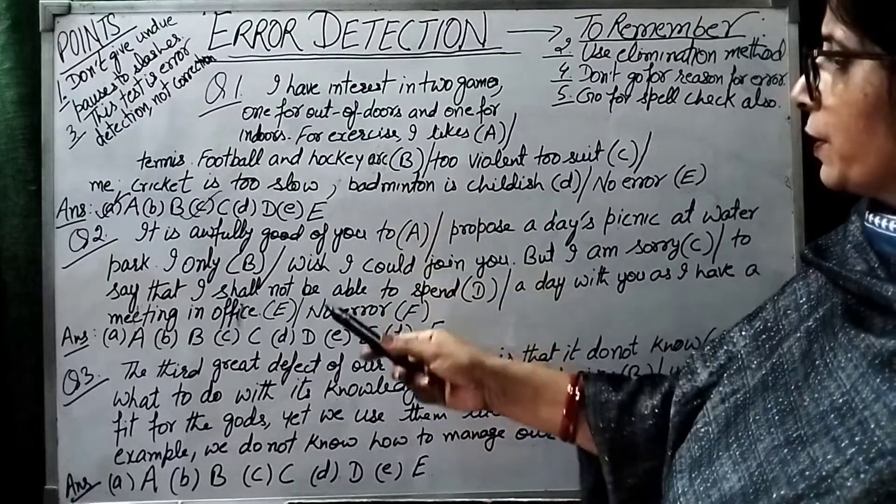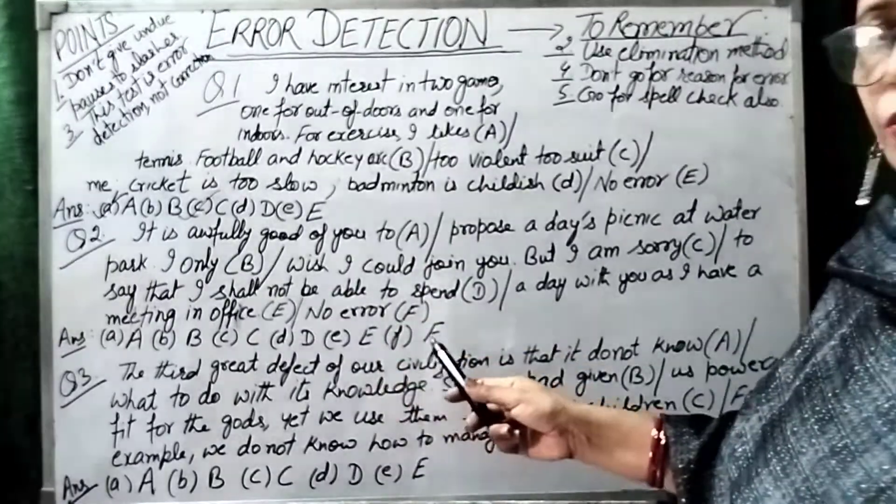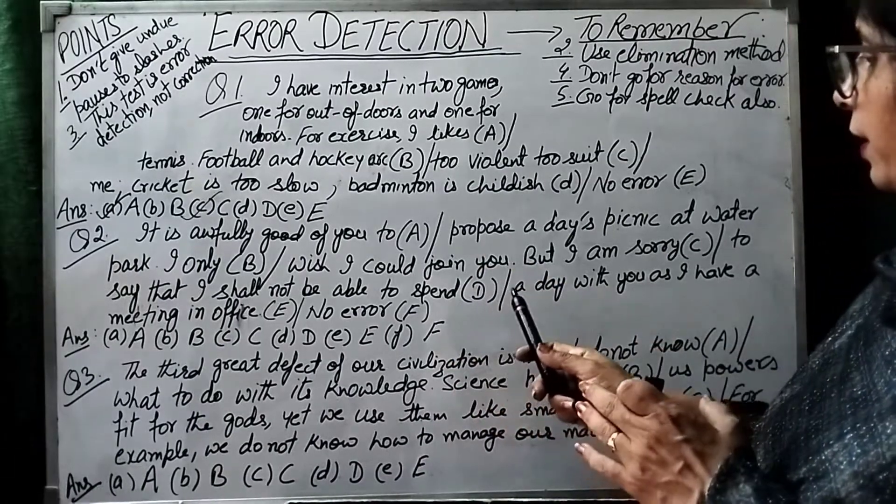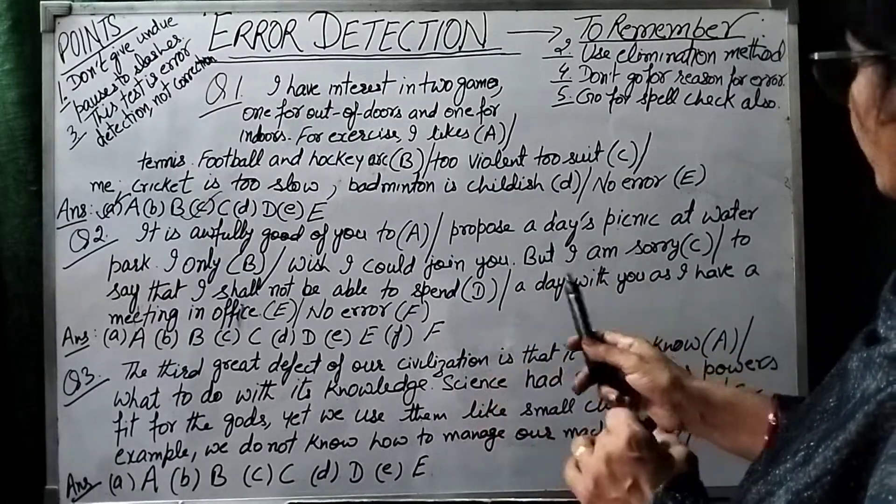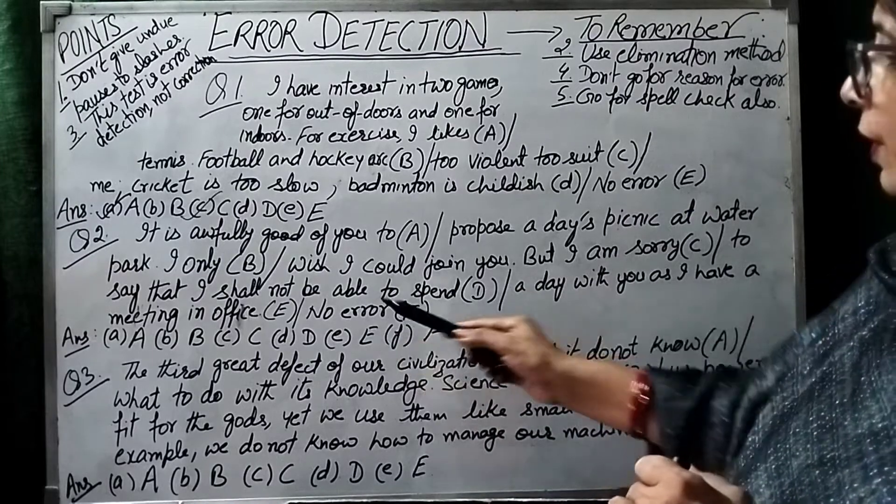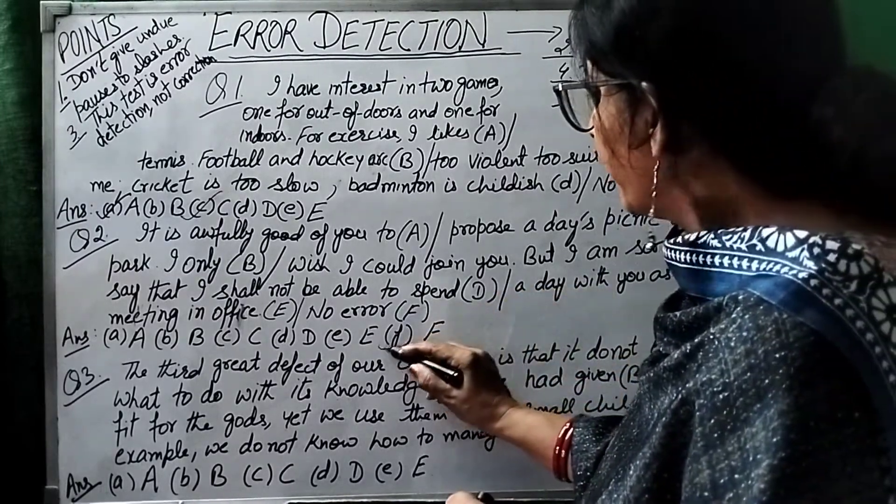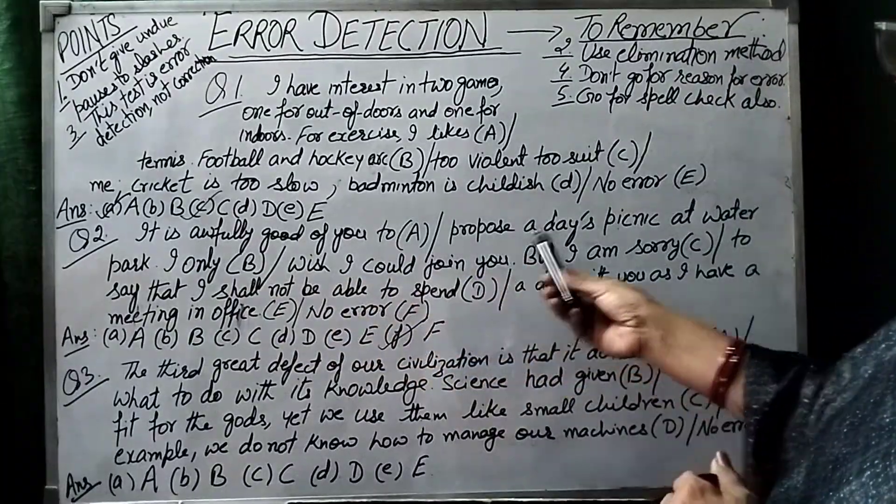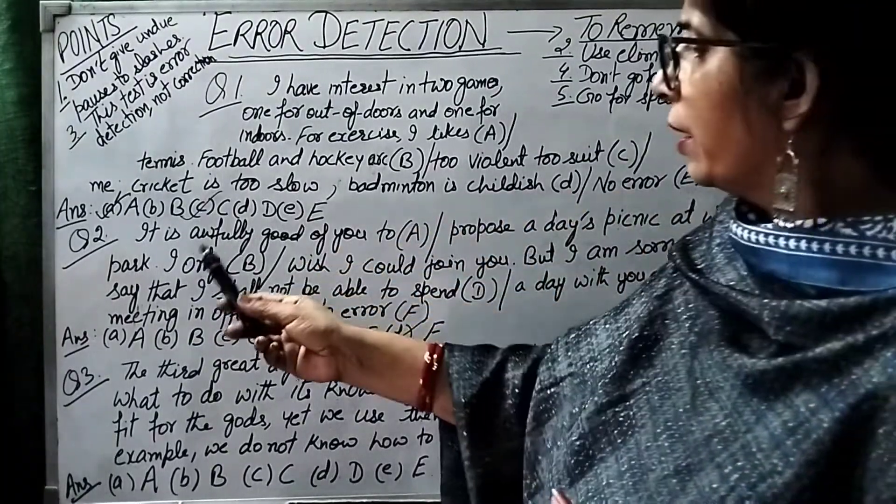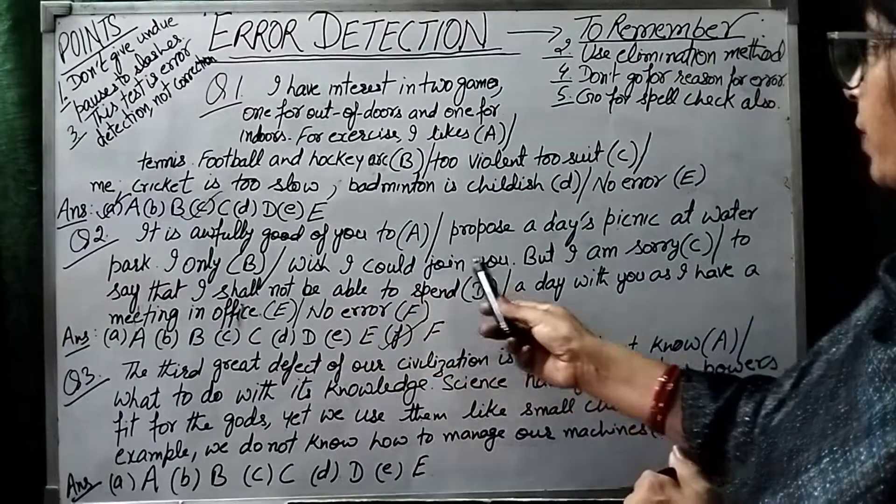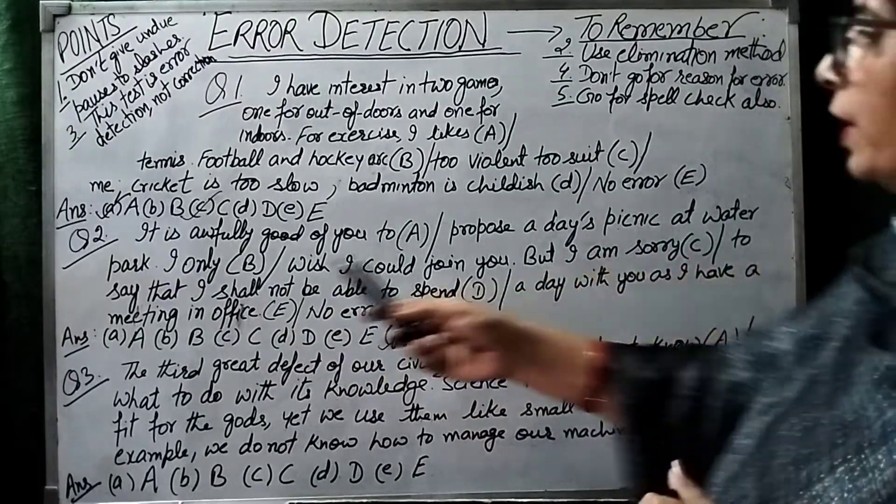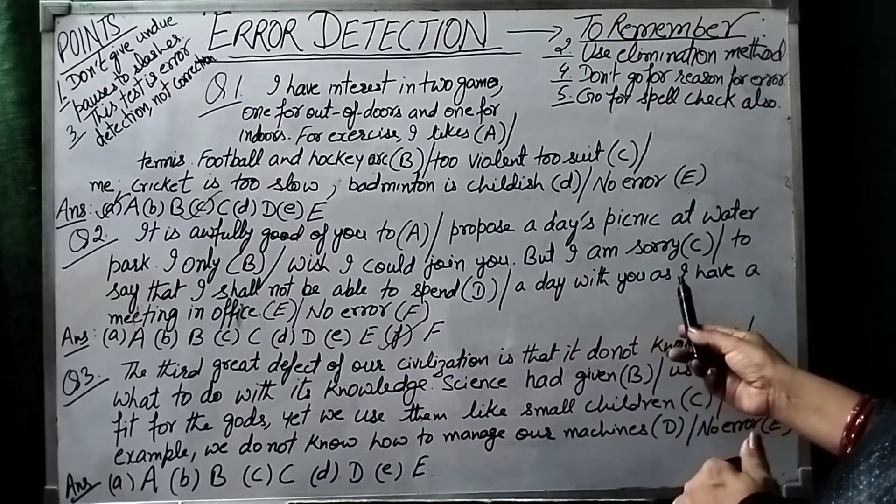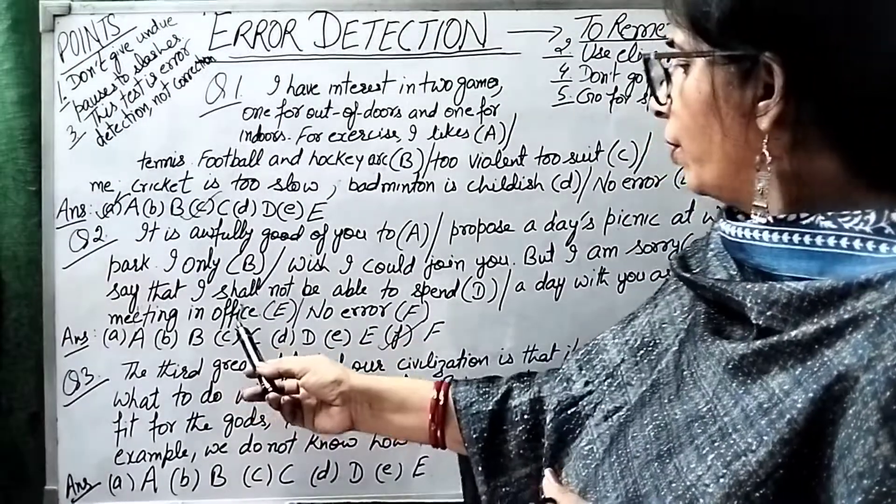Already we have five portions in our portion, and then six is no error. Now actually, there is no error. There is no error in this one. No error is F. So we have no error. It is awfully good of you to propose a day's picnic at water park. I only wish I could join you, but I am sorry to say that I shall not be able to spend a day with you as I have a meeting in office.